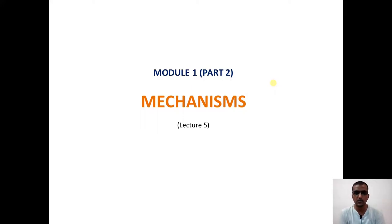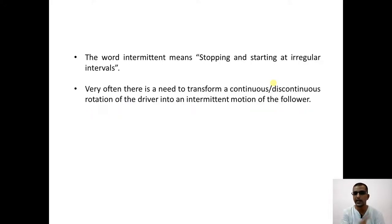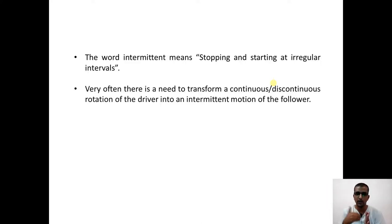Welcome to lecture number 5 in this lecture series on mechanisms: Intermittent Motion Mechanisms. Previously we discussed quick return motion mechanisms and straight line motion mechanisms. The word intermittent means stopping and starting at regular or irregular intervals. Very often we need to convert a continuous or discontinuous motion of a driver into an intermittent motion that starts and stops at regular or irregular intervals in a follower.